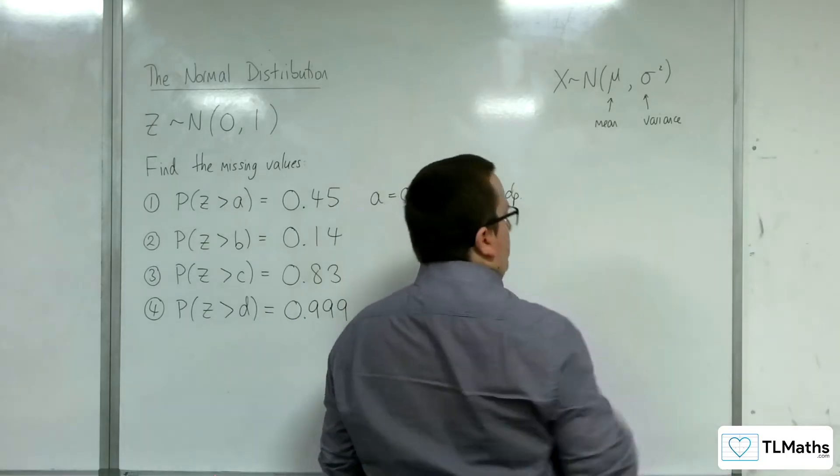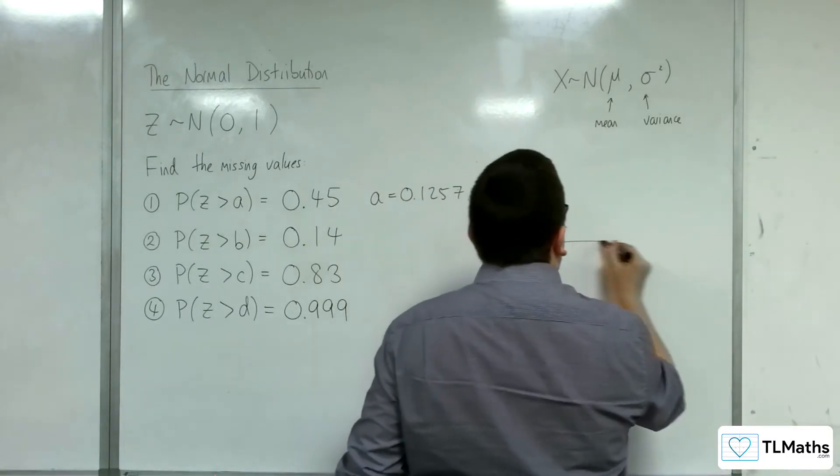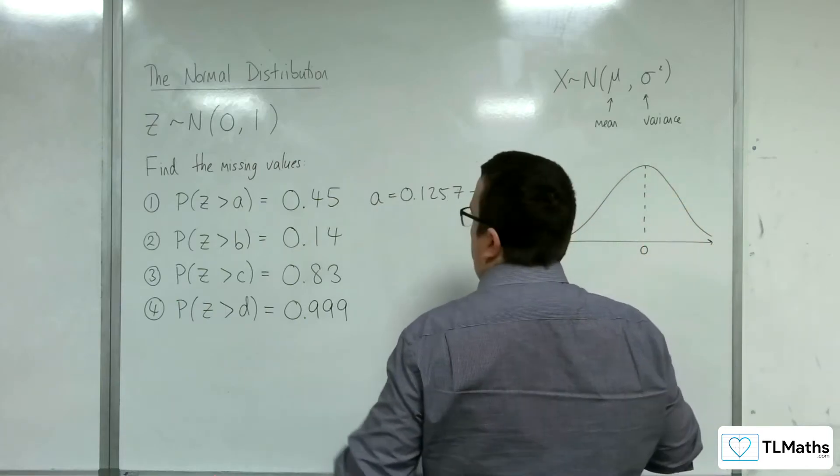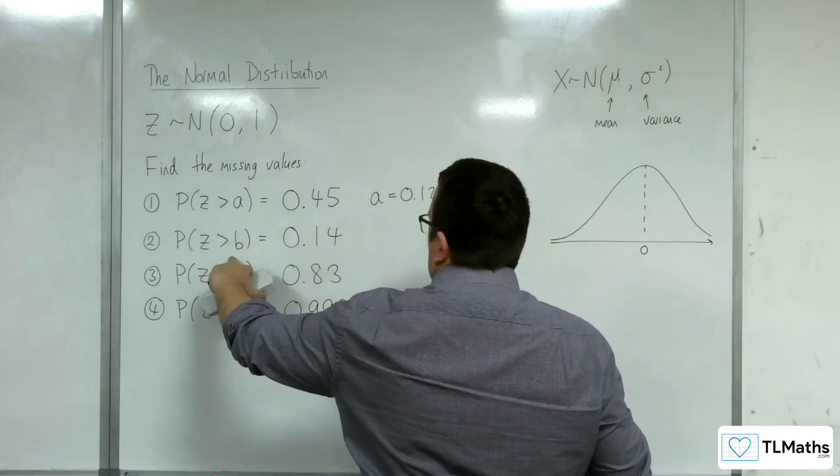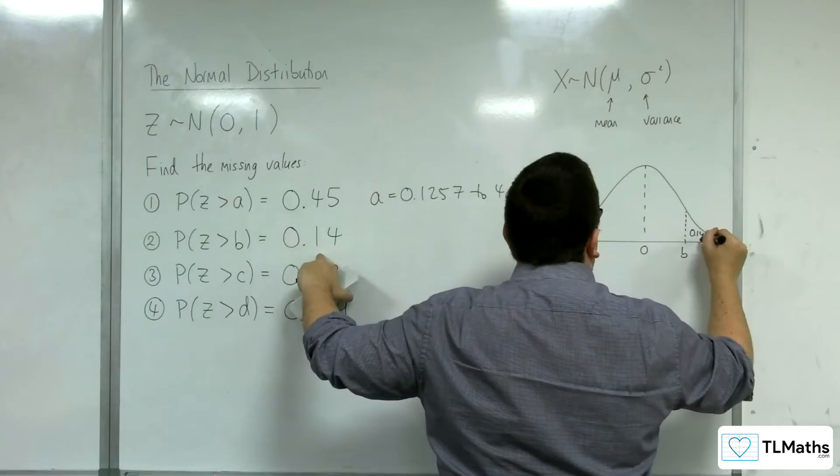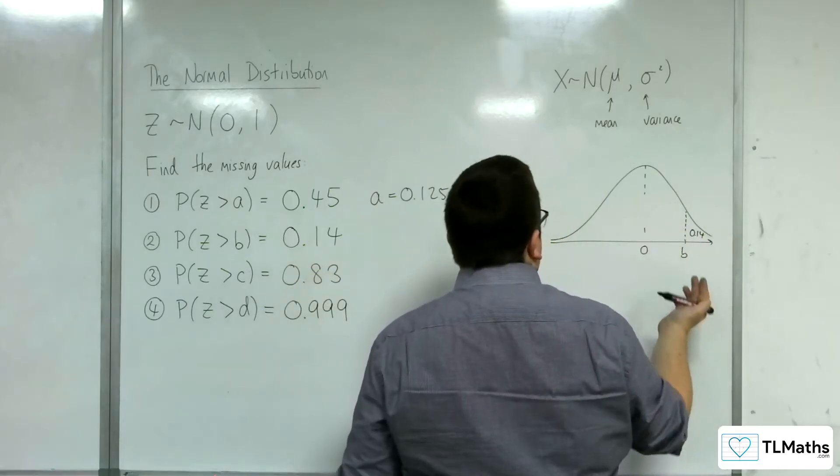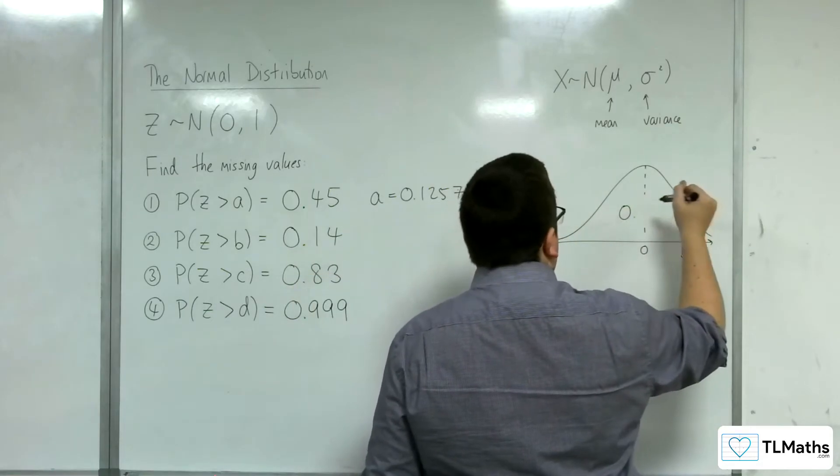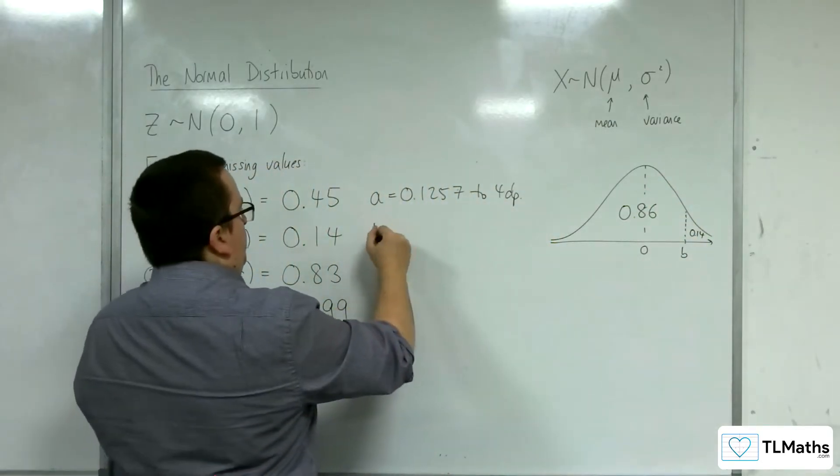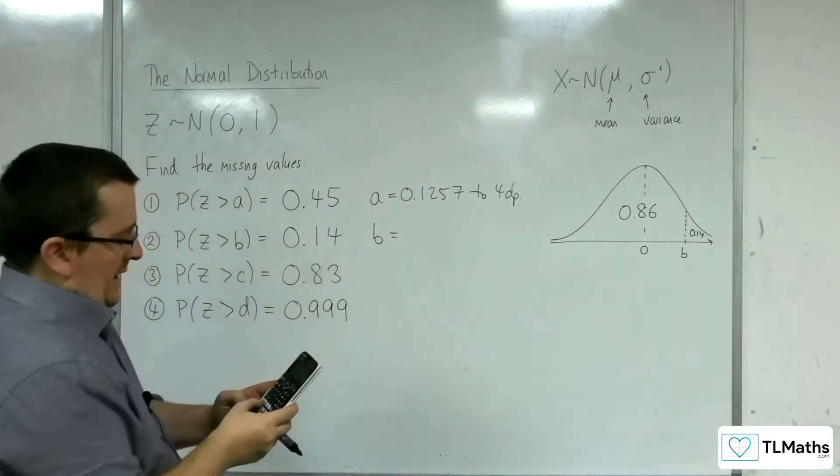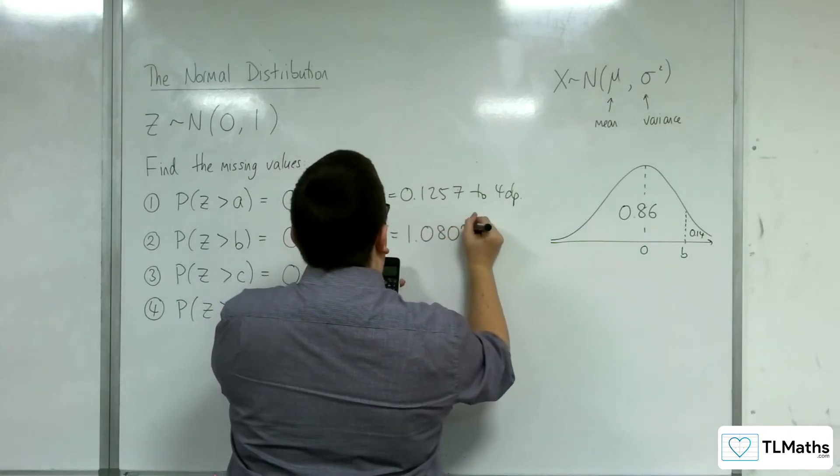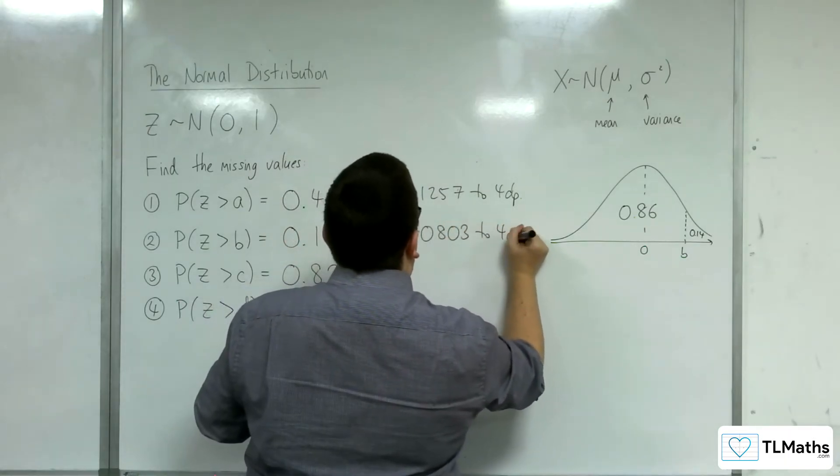For number 2, the area to the right of B is 0.14, so B must be further to the right. I can't look up 0.14 directly, so I'll use 0.86 instead. Change the area to 0.86, and we get B equals 1.0803 to 4 decimal places.